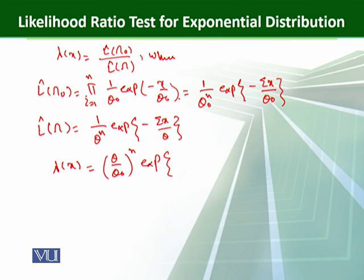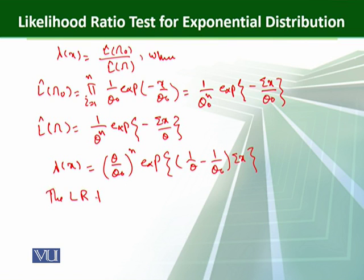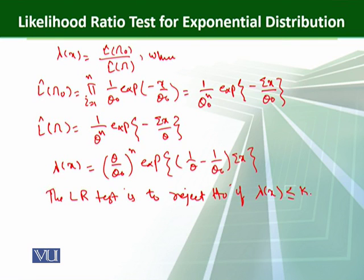Taking this term up, the negative signs cancel, giving us exp((1/theta - 1/theta naught) * sum(x)). This is lambda(x). The likelihood ratio test is to reject H naught if lambda(x) is less than or equal to k, where k is determined by the size condition.